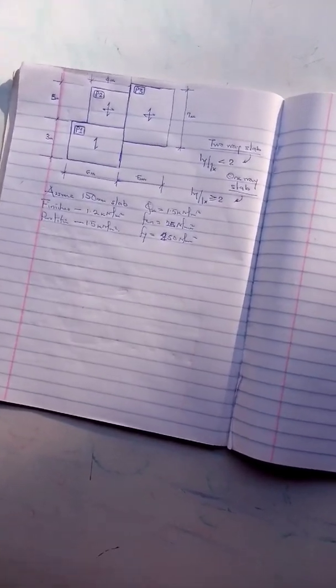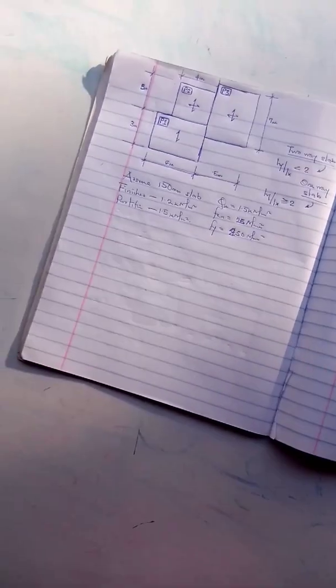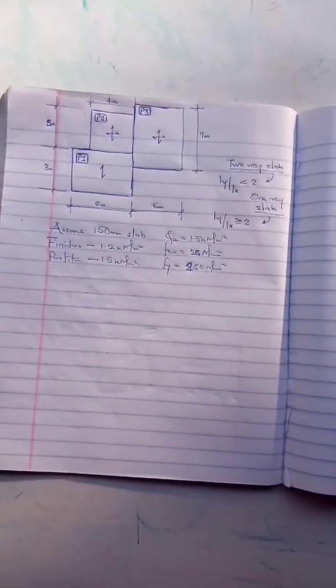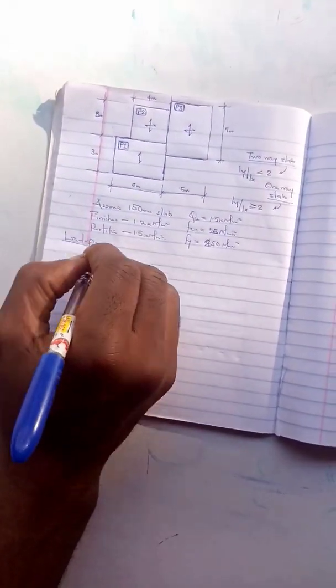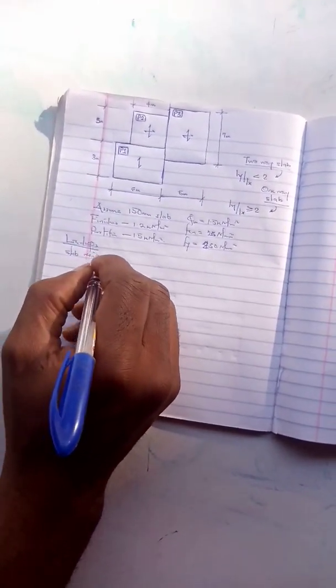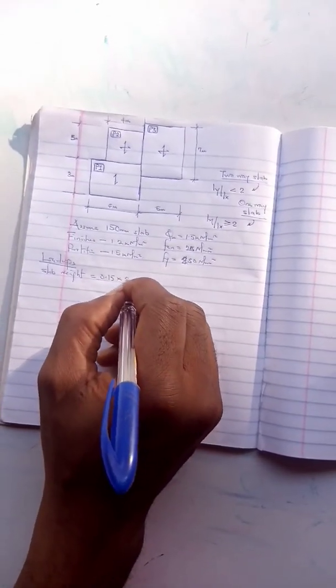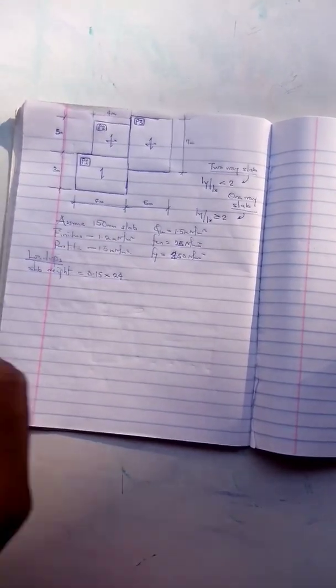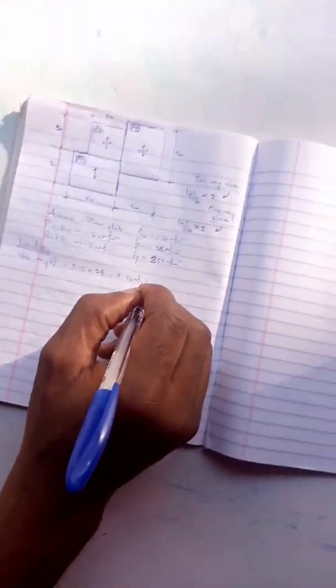The first thing we have to do is determine your loadings. For loadings now you have your slab own weight: the thickness 0.15 meter multiplied by 24 which is the density of concrete, so that will give 3.6 kilonewton per meter square.